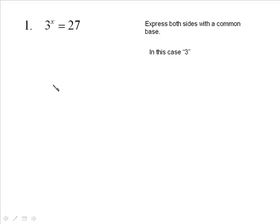You're typically taking the big number down to the small, though in some cases you will have choices. This would then be written as 3 to the x is equal to 3 to the exponent of 3. Once you have equal bases, you drop the bases and simply equate the exponents. So x is equal to 3. That's really all you do, even if the questions get very complicated looking.